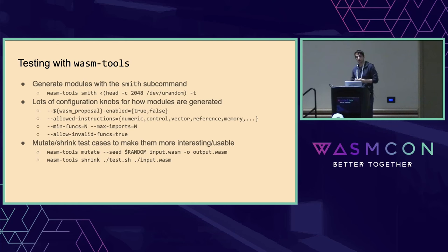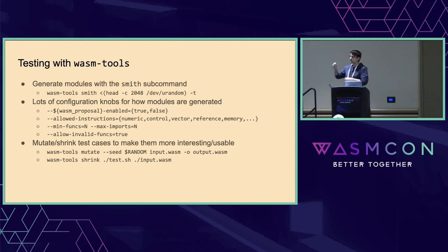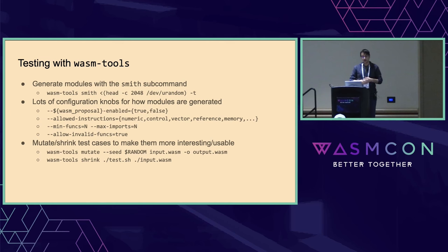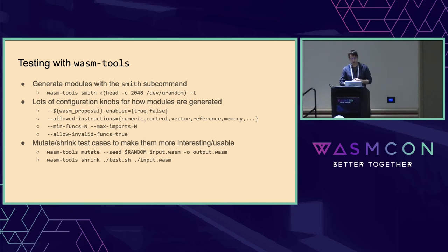That's the overall picture of testing in wasm-tools. The high-level idea: we run the smith subcommand to generate random modules with all sorts of knobs to control how the module looks depending on which runtime you're testing against. We can mutate these modules to make them a little bit more interesting in a different way, and then shrink them if they're too big to debug.